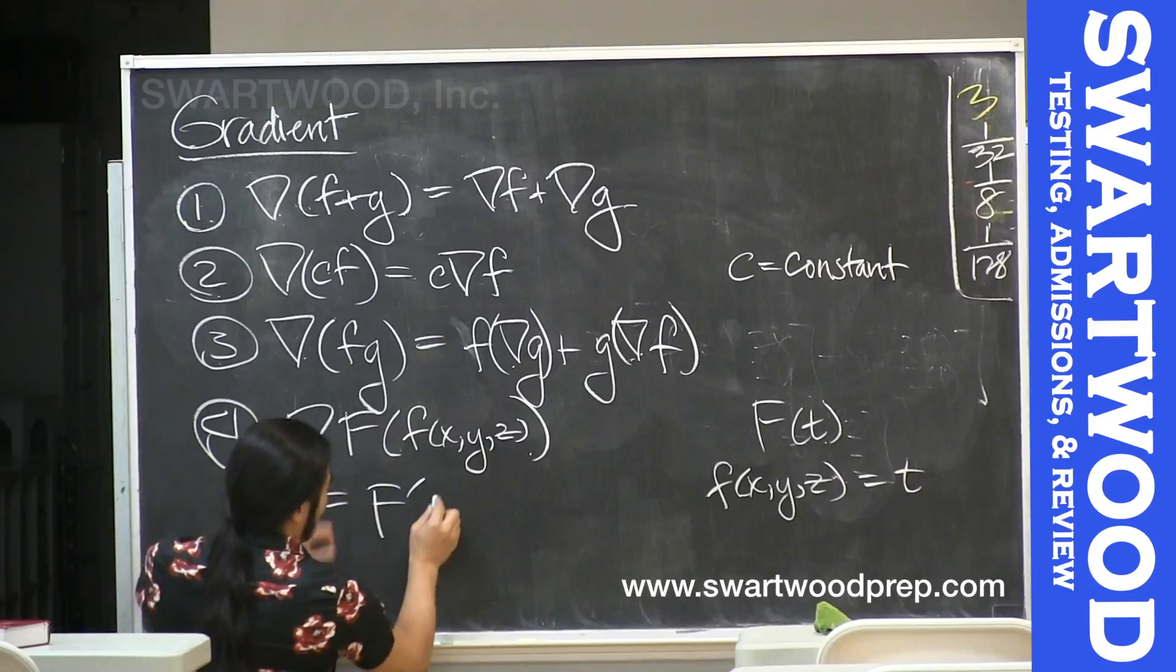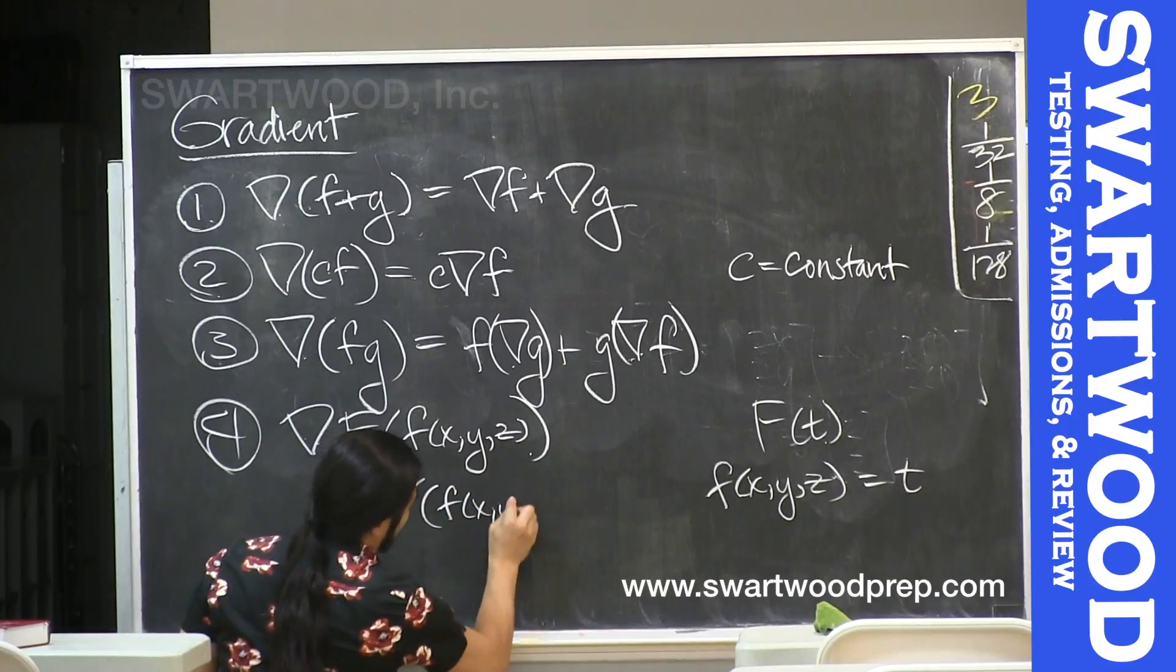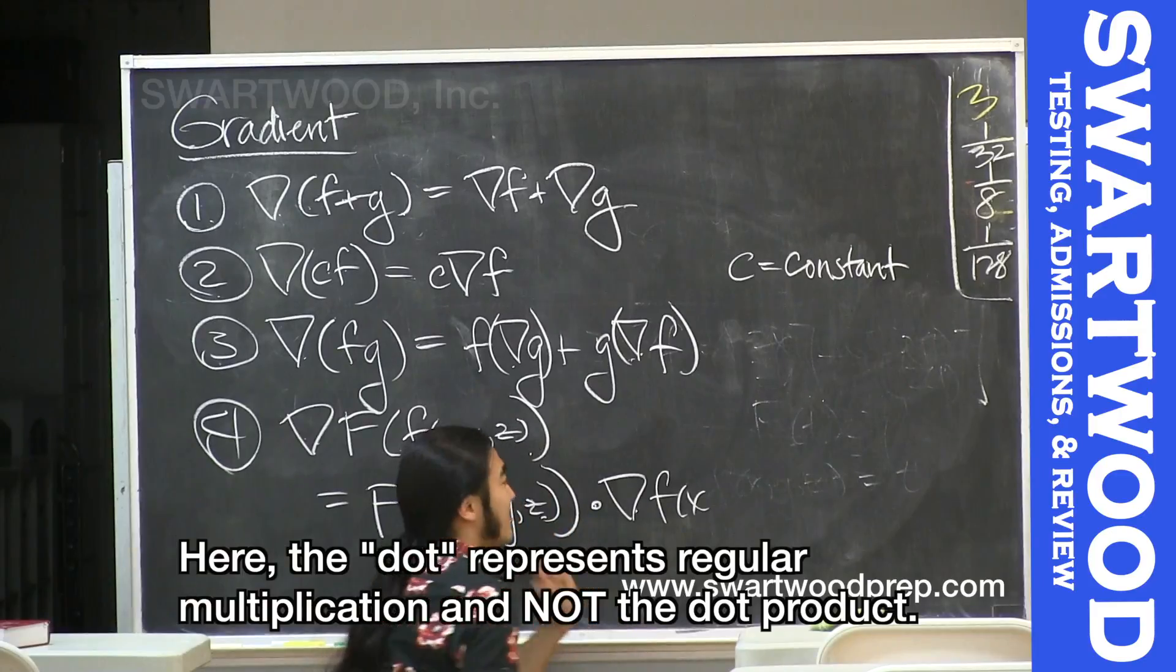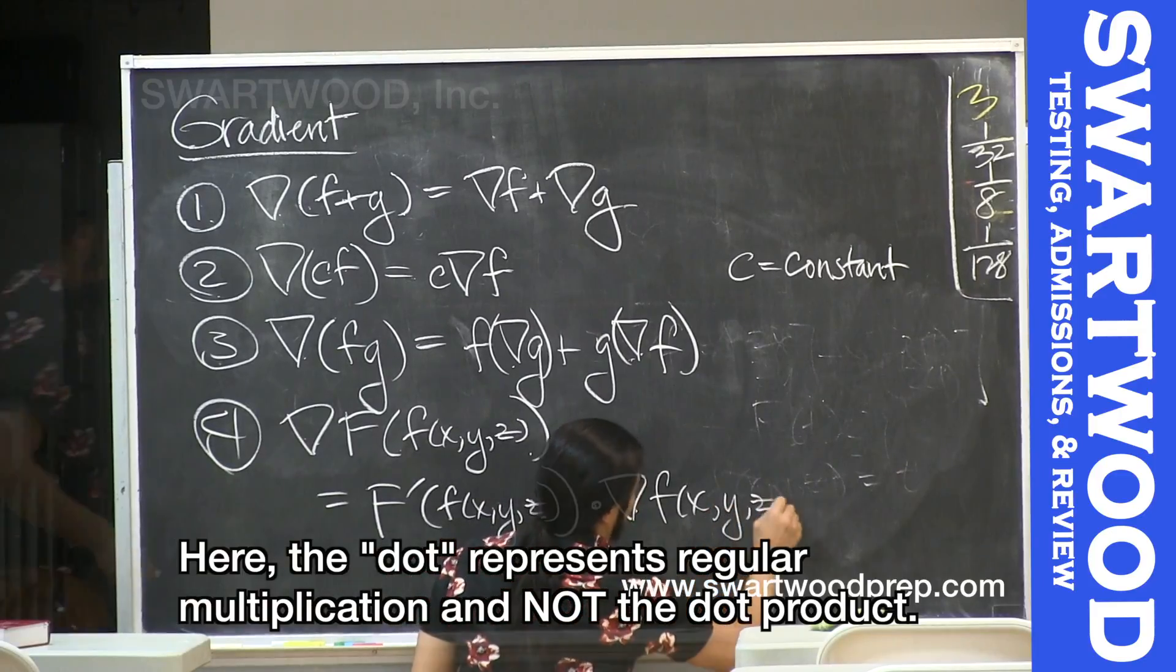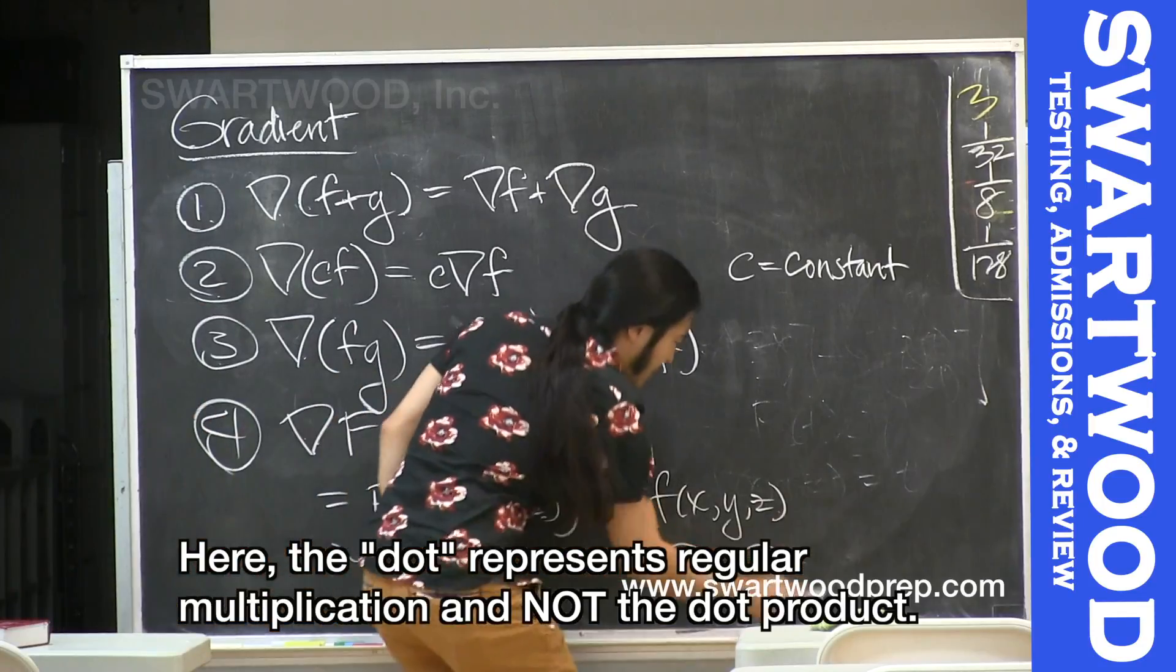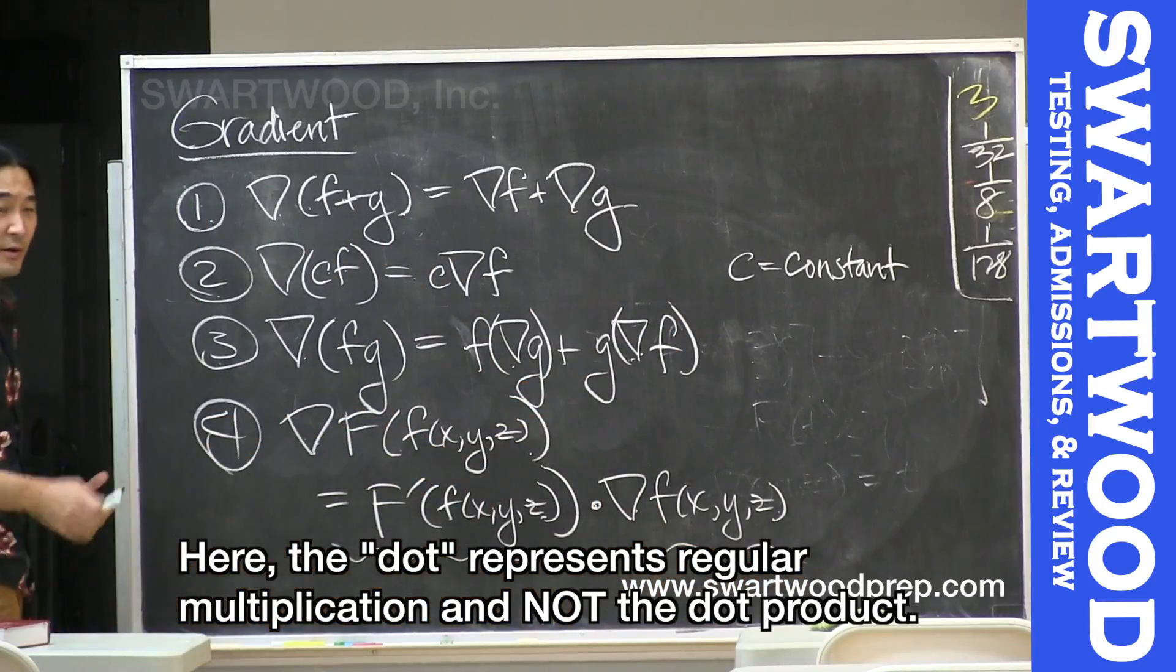For you to do that, what does this guy look like? Well, it looks very much like the chain rule. You take the derivative of the outside guy, and you plug in f(x,y,z), and you multiply it by the gradient of f(x,y,z). I think most of these are pretty clear. I think this one might be a little bit confusing. So let's do a quickie problem with this so we get a feel for it.